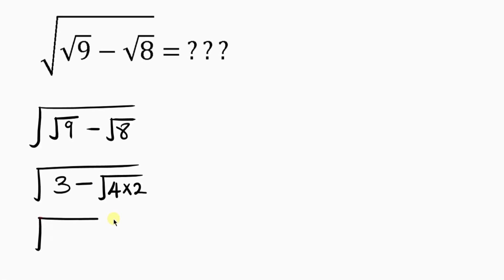So now we're going to have the square root of 3 minus. Now, like I said, 4 is the perfect square. So what is the square root of 4? The square root of 4 will give you 2. And since 2 is not a perfect square, it's going to remain inside of the square root.